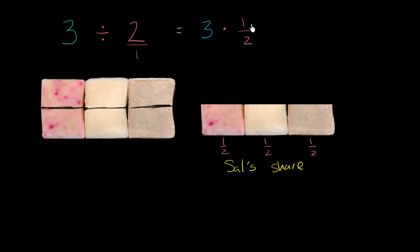But what's three times one half? Three times one half is equal to three halves. So just doing this little simple smelly soap example, we got a very interesting result. Three divided by two is the same thing as three times one half, which is the same thing as three halves.